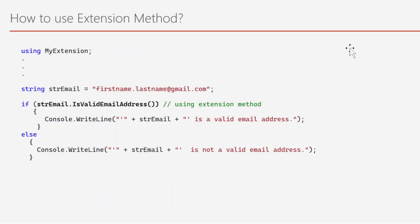Now we will focus on how to use an extension method. The first statement `using MyExtension` basically imports the MyExtension class. In the next statement, a string variable `strEmail` holds the email address like `firstname.lastname@gmail.com`. In the if statement we call `strEmail.IsValidEmailAddress()` — this is how we call the extension method, because IsValidEmailAddress is part of the string class itself since we defined it as an extension method.